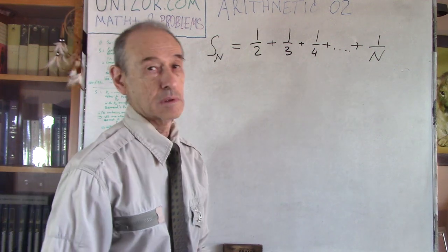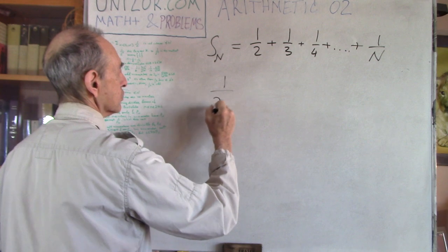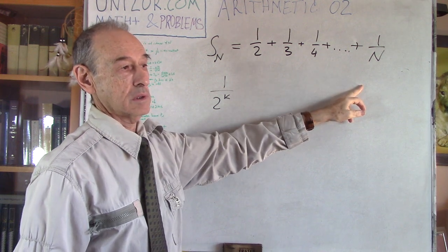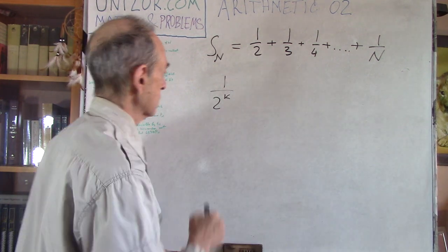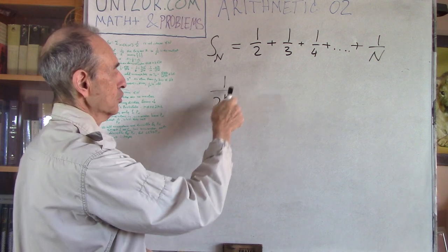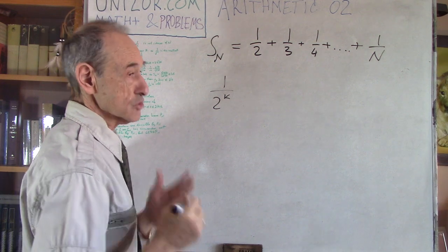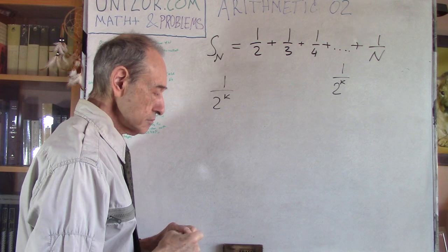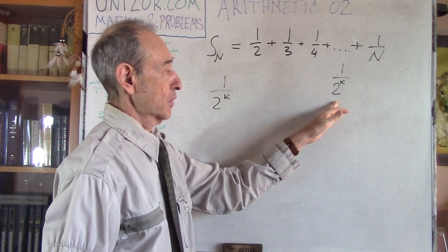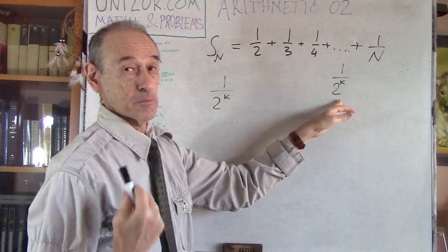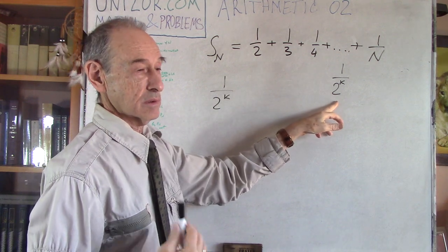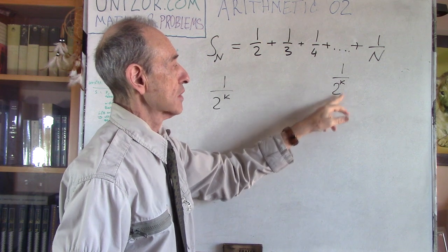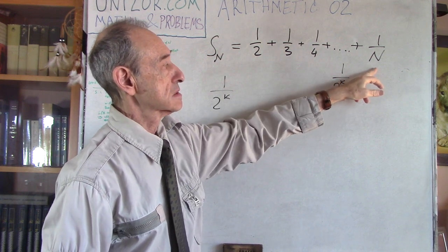Among these numbers are numbers which have the form 1 over 2 to the power of k — like one half, one fourth, one eighth, one sixteenth, etc. So this is 1/2, 1/2², 1/2³, 1/2⁴, and so on. Let's choose the rightmost one — the one with the greatest k such that 1/2^k is still greater than 1/n. Since it's the rightmost, this is the minimum among all fractions of this type, the smallest one, because the denominator is increasing.